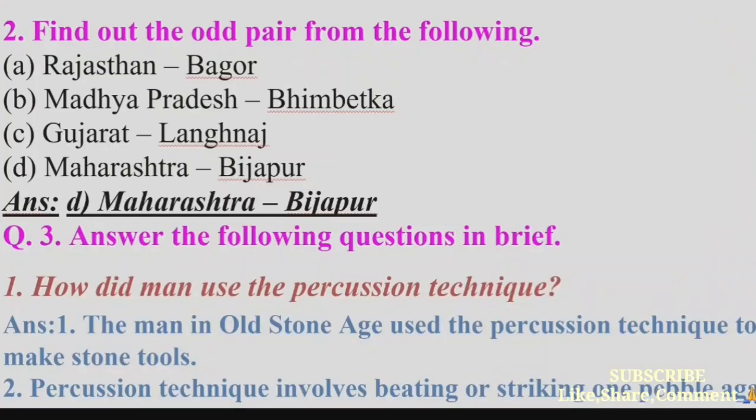Question 2: Find the odd pair from the following. (a) Rajasthan – Bago, (b) Madhya Pradesh – Bhimbetka, (c) Gujarat – Langhnaj, (d) Maharashtra – Vijapur. The correct answer is (d) Maharashtra and Vijapur.